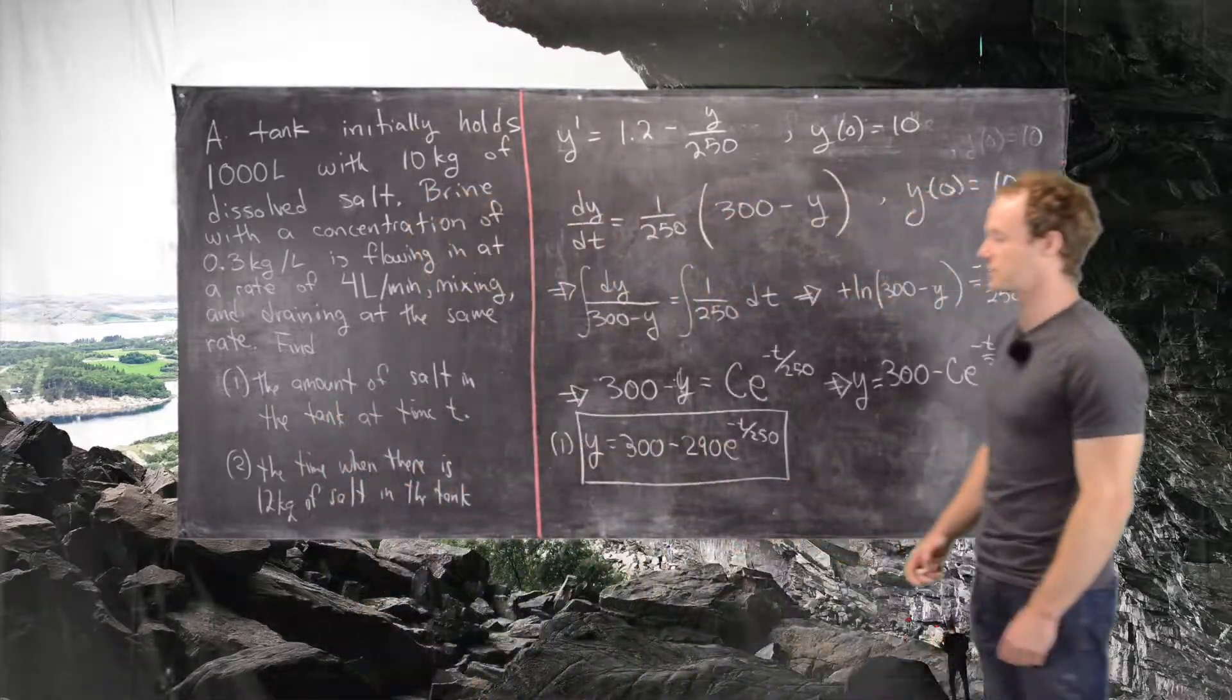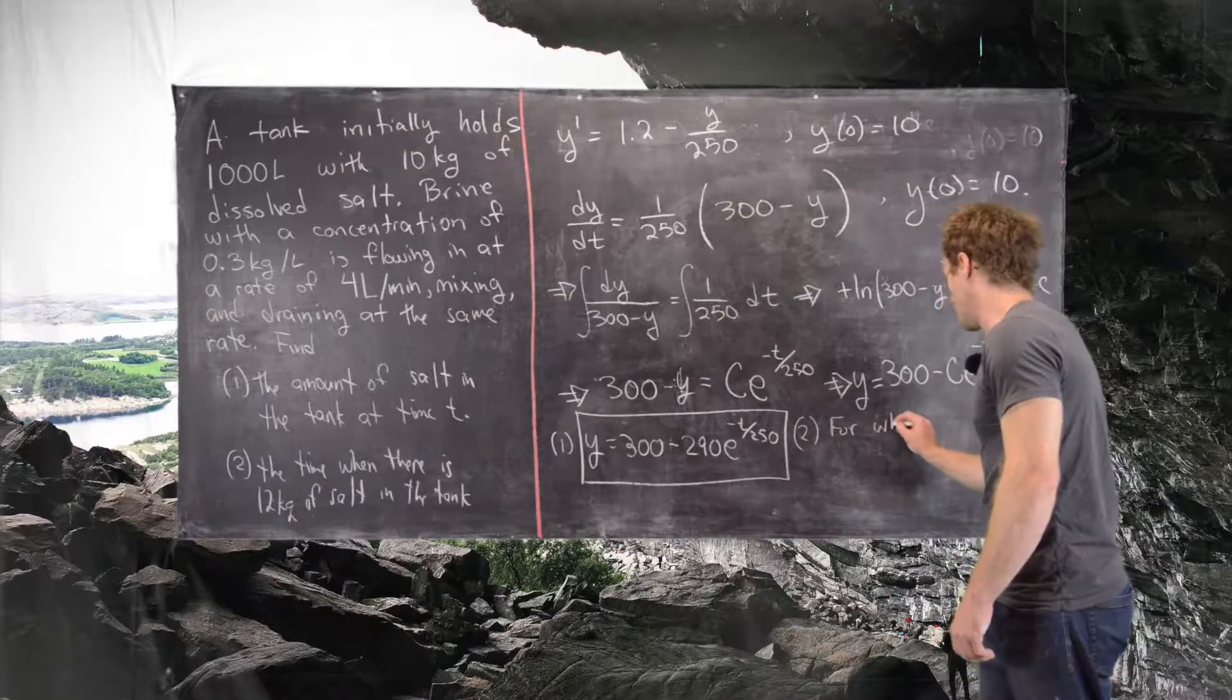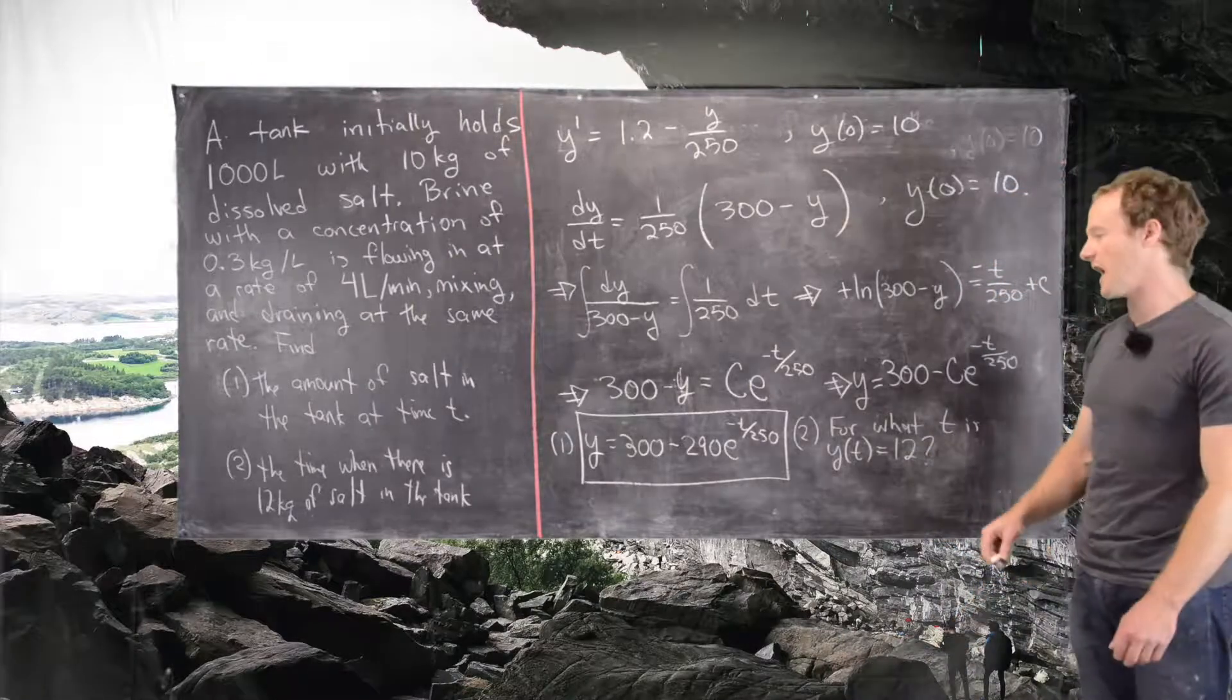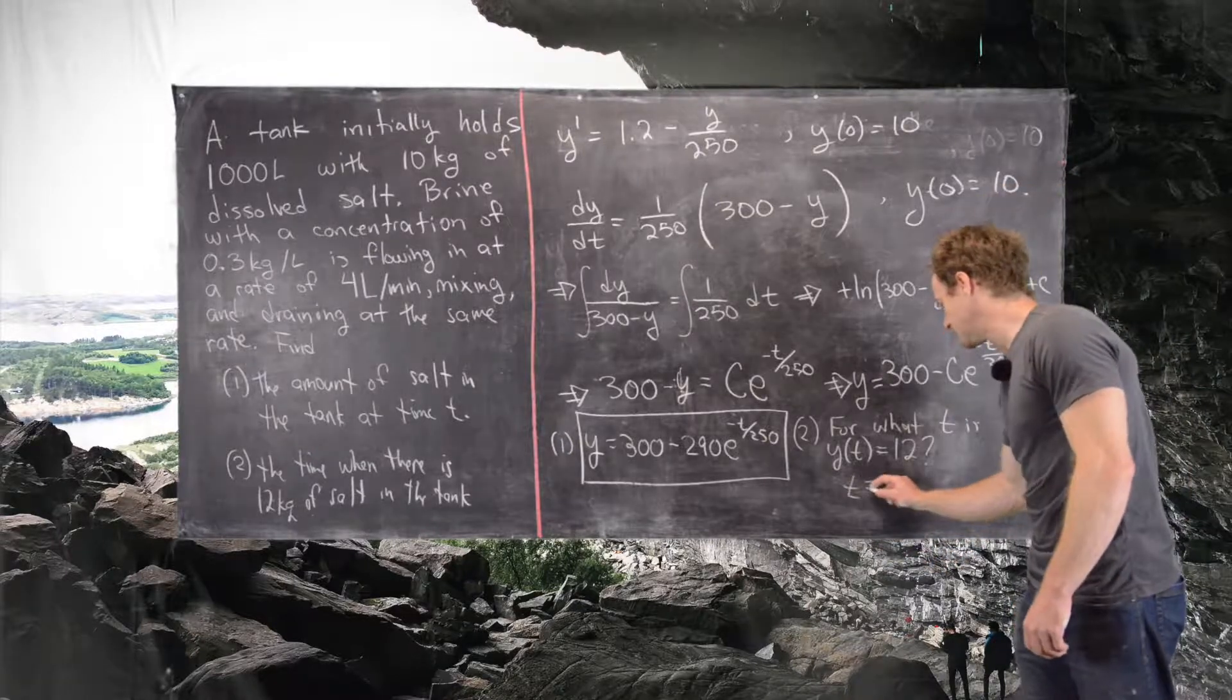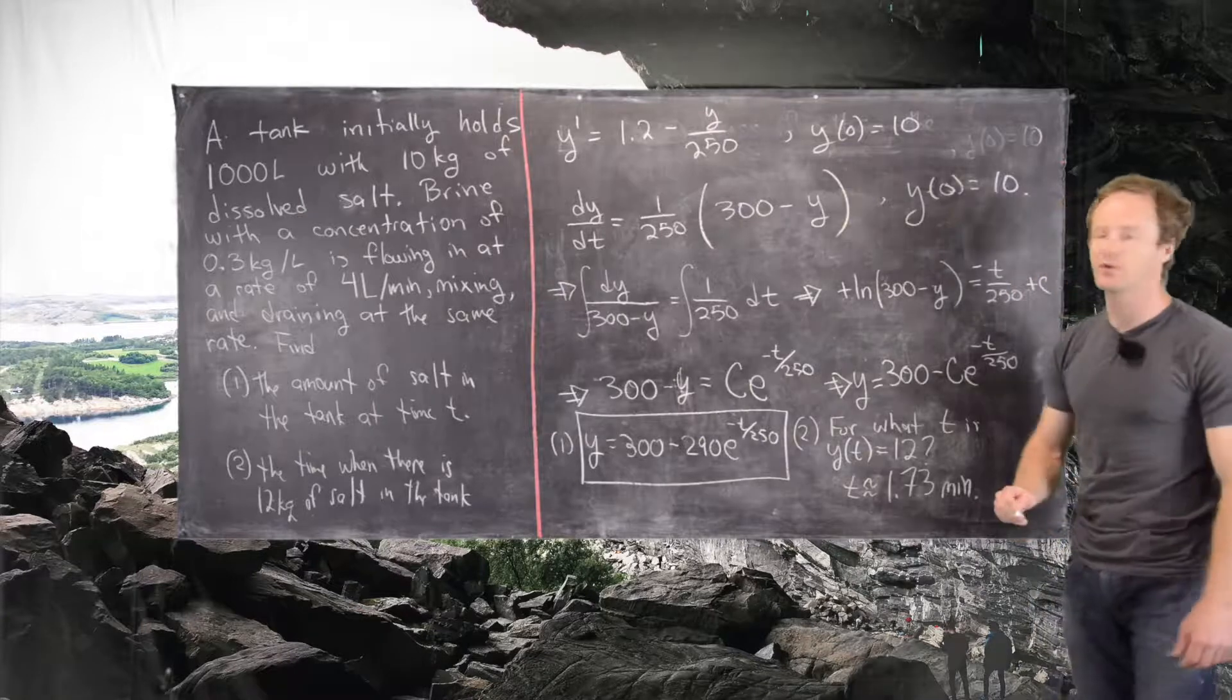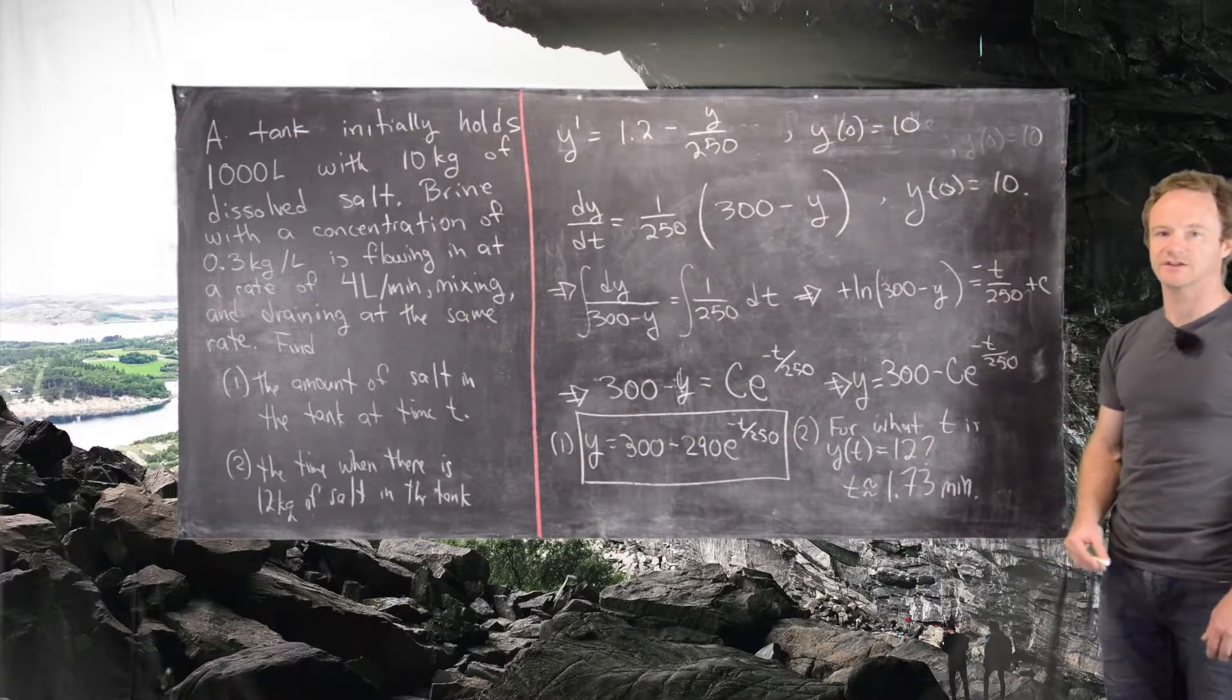Now, the next thing we need to know as an answer to the second question is for what t is y of t equal to 12. For that, we can just very simply set this equation equal to 12 and solve it. And what you'll see is you get approximately t is 1.73 minutes. So pretty quickly, you get to 12 kilograms of salt into the tank. So this is the final answer for this problem.